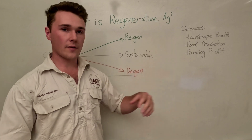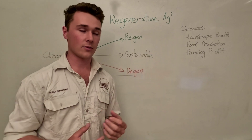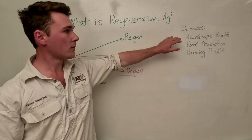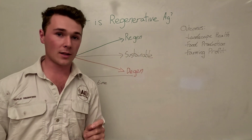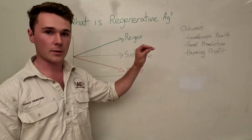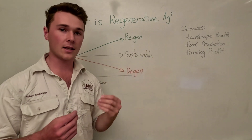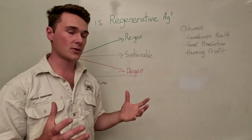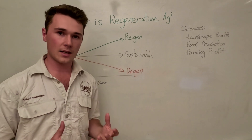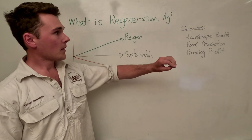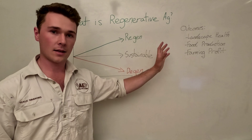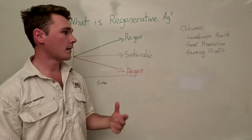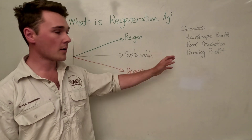One of the outcomes we want from regenerative agriculture is to increase the nutritional value of our food and improve the landscape health around our food. Finally, and most importantly, is farming profit — we want to increase farming profit. You can't be green if you're in the red. Regenerative agriculture is not regenerative in itself if it's not making farmers money. Farmers aren't running a charity, they're running a business, so it's very important they can actually make money.